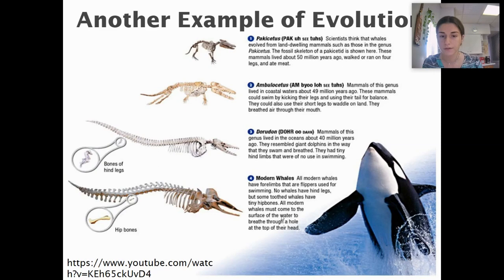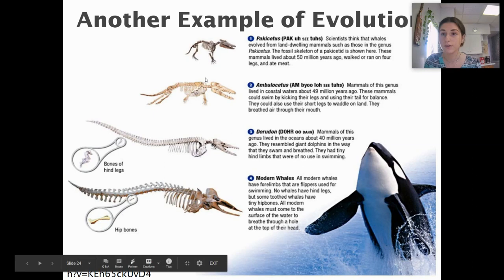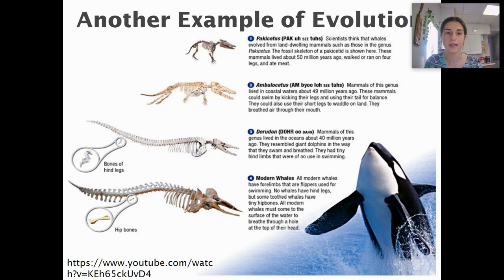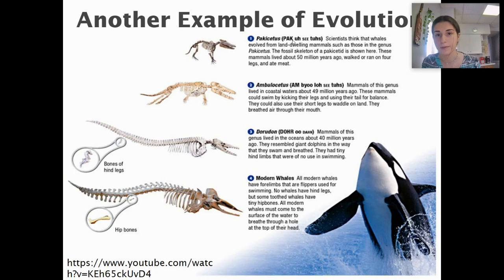All modern whales must come up to the surface of the water to breathe through a hole at the top of their head — even though they swim in water, they cannot breathe underwater. Certain structures are the same across these creatures — the backbone, face shape, and ribs — and because certain characteristics are similar and function the same way, that shows us that these whales evolved from that original land mammal ancestor, the Pakicetus.